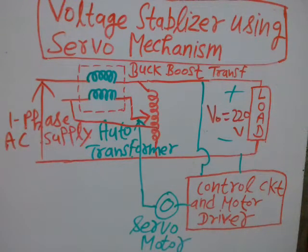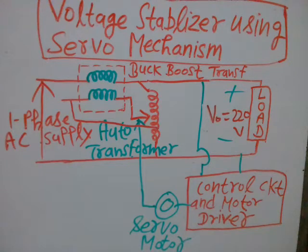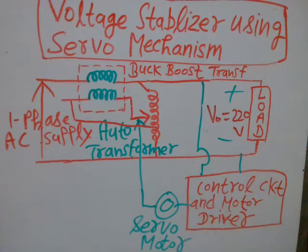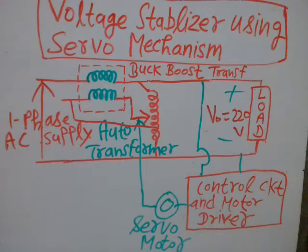When the AC supply is applied, a buck-boost transformer is connected here. This buck-boost transformer is used to make adjustments to the voltage applied to AC equipment. It is also frequently used in uninterrupted power supplies (UPS) for computers, and can be used to power low-voltage circuits including lighting circuits and control circuits.